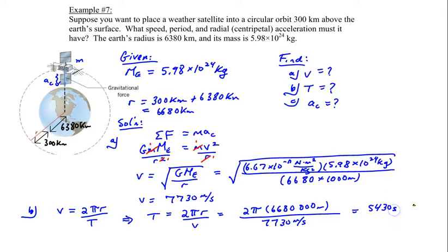If you convert this into minutes by dividing by 60 seconds for every minute, you'll get the period is about 90.5 minutes. So this is how long the satellite will revolve around the Earth.